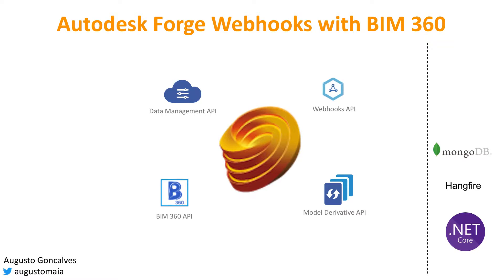Hello, this is an Autodesk Forge webhook sample with BIM 360. For this sample I'll be using the Data Management API to list all my BIM 360 files, and when a new file is uploaded to BIM 360 I will use webhooks to notify about that new file and check when that file is fully translated, using the Model Derivative API to access the metadata of that file.